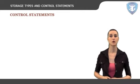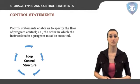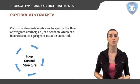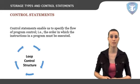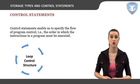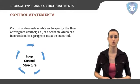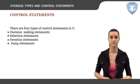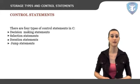We shall now discuss control statements. Control statements enable us to specify the flow of program control — the order in which instructions in a program must be executed. They make it possible to make decisions, perform tasks repeatedly, or jump from one section of code to another. There are four types of control statements in C: decision-making statements, selection statements, iteration statements, and jump statements.